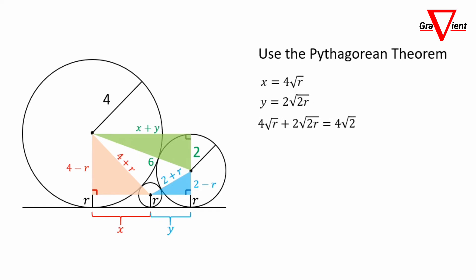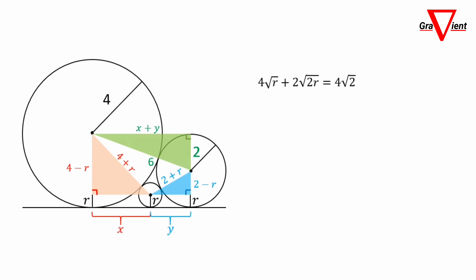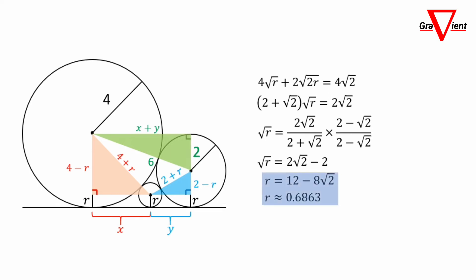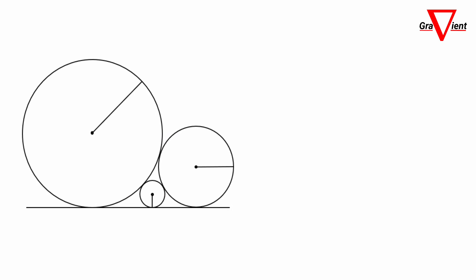Substitute X and Y into the last equation, then simplify it. Factor out the square root of R and divide both sides by 2 plus the square root of 2. Simplify again by multiplying the numerator and denominator by 2 minus the square root of 2. Then square both sides. We get R equals 12 minus 8 times the square root of 2, approximately 0.6863.